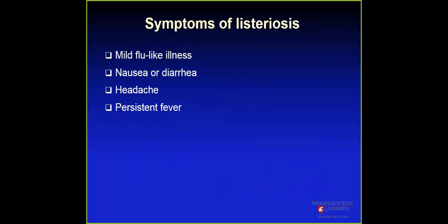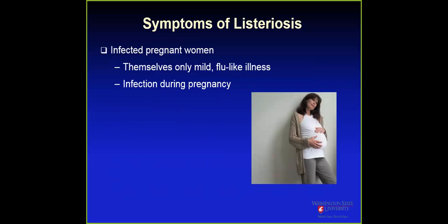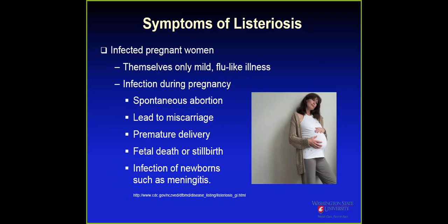The symptoms of Listeria are mild flu-like illness, nausea, headache, and persistent fever. In extreme cases, there can be brain infections and blood infections. For pregnant women specifically, while they may experience flu-like illness, the damage can extend to the baby — causing spontaneous miscarriage, stillbirths, and other outcomes associated with the baby. That's where the danger is unique.